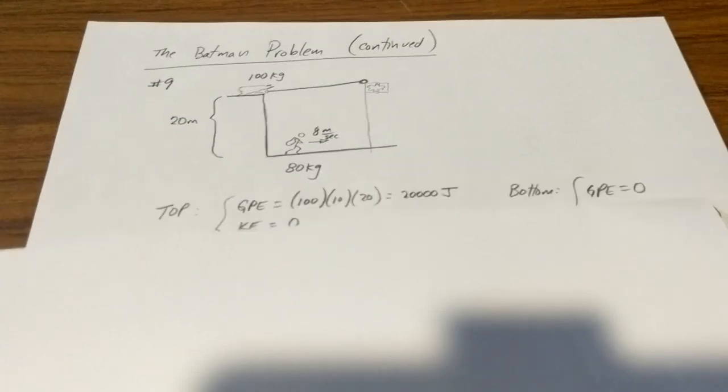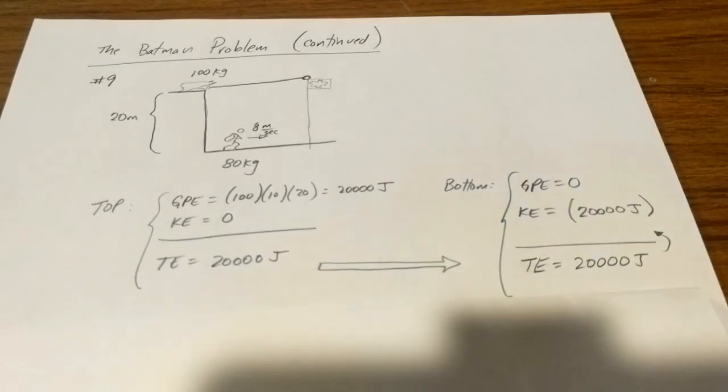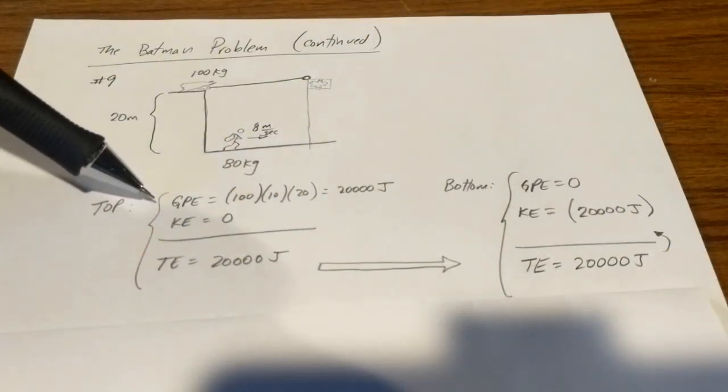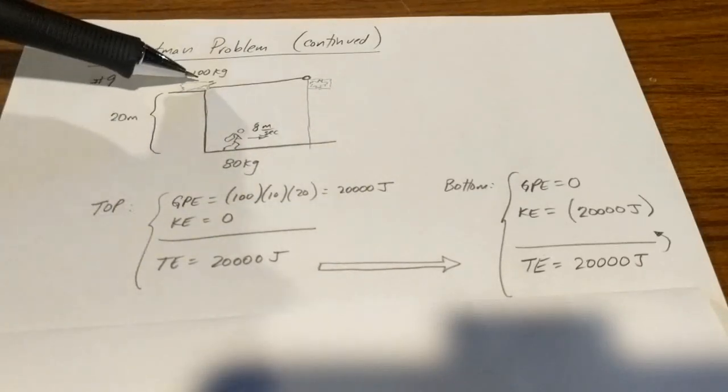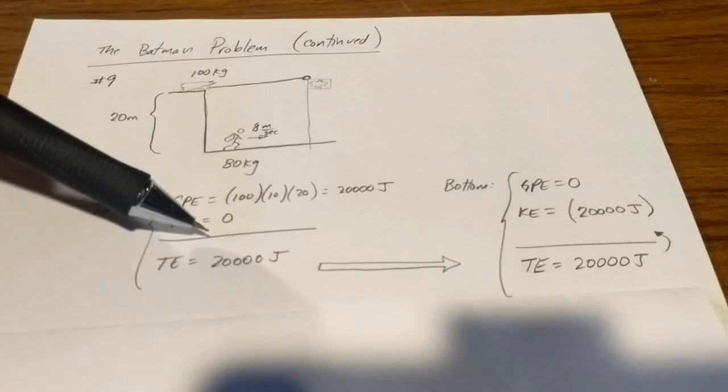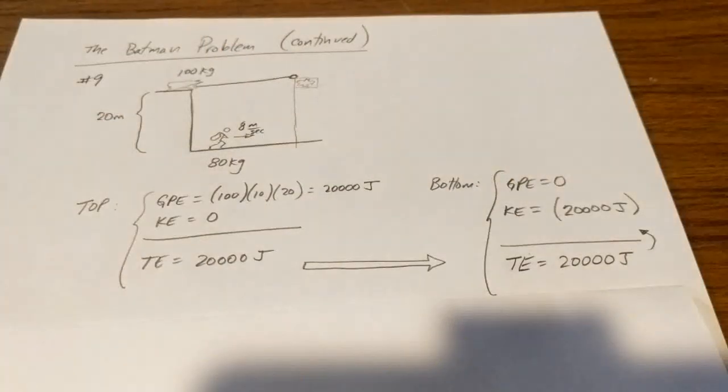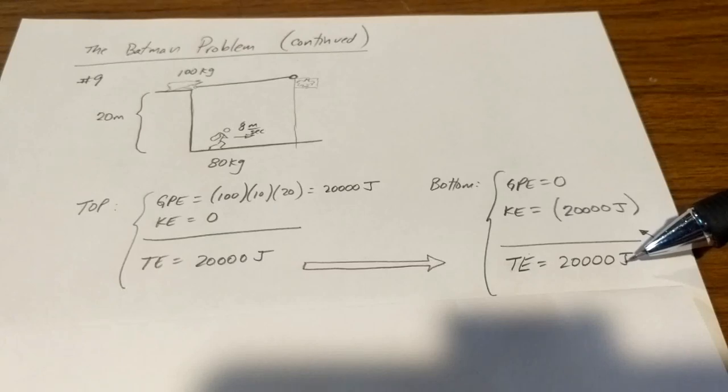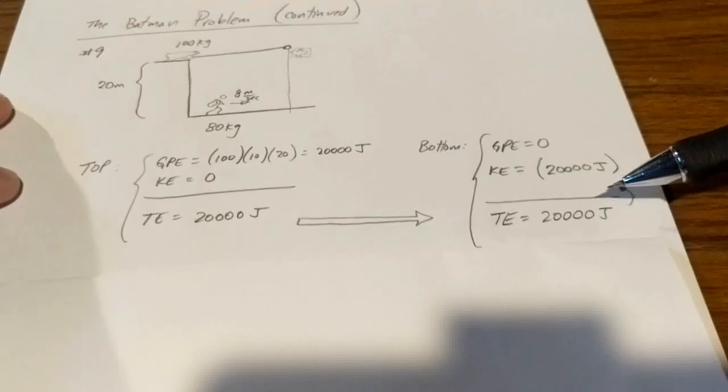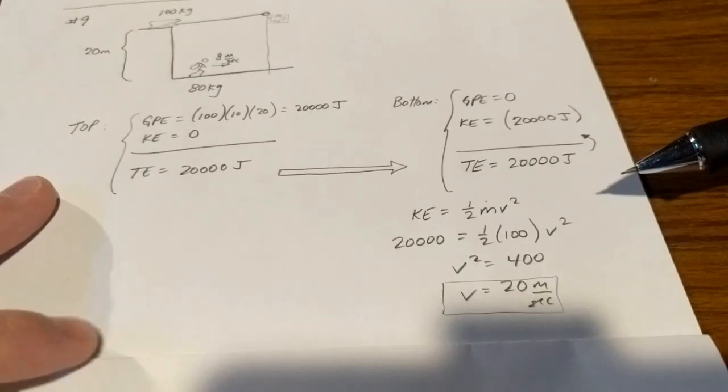So here goes, our energy analysis looked like this. We had at the top Batman had gravitational potential energy of 20,000 joules, which meant that his total energy since he was stationary there was 20,000 joules. By the time he swung down to the bottom, his potential energy had dropped to zero and so all of his energy, all of the total energy which had to be the same by conservation of energy, had turned into kinetic energy. This allowed us to figure out Batman's speed when he got to the bottom and it was 20 meters per second.